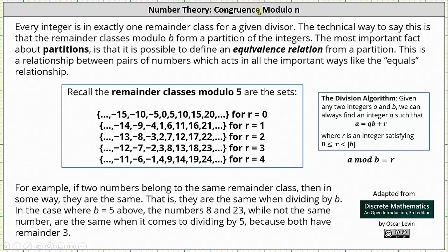Welcome to an introduction to congruence modulo n. Every integer is in exactly one remainder class for a given divisor. The technical way to say this is that the remainder classes modulo b form a partition of the integers. The most important fact about partitions is that it is possible to define an equivalence relation from a partition. That is, a relationship between pairs of numbers which acts in all the important ways like the equals relationship.